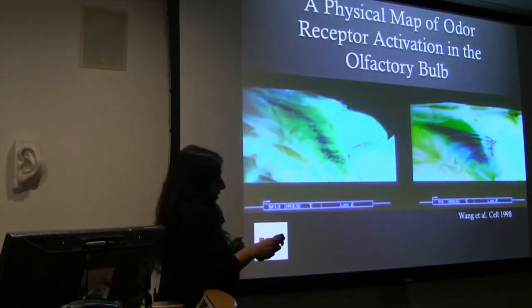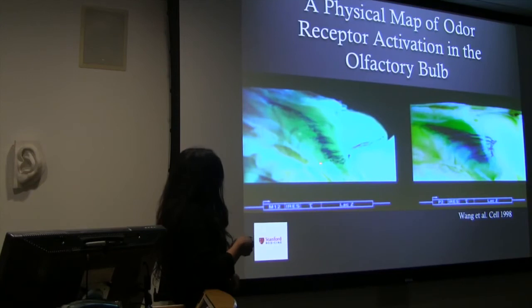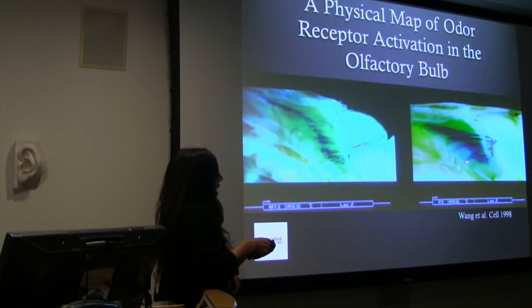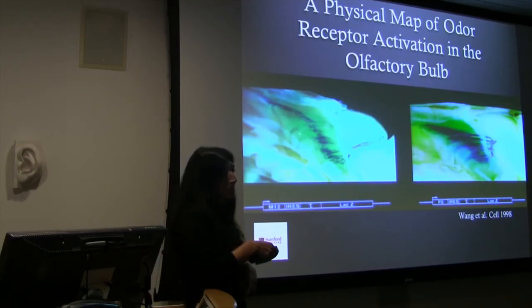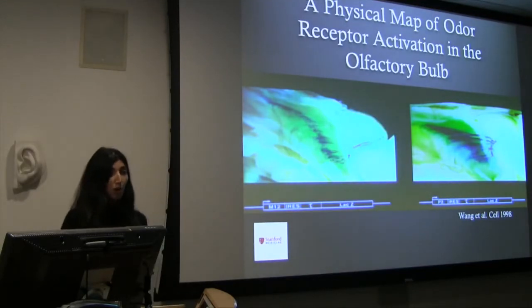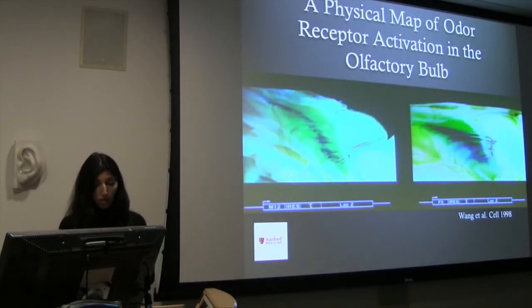Here is our olfactory bulb with neurons moving through. There are thousands of the same similar type of olfactory receptor neuron, but once they cross that cribriform they all go to the same place. This is a different type of olfactory receptor neuron, and they're all gravitating towards the same place within that bulb. There is a pattern beginning to form as to where these neurons are directed.